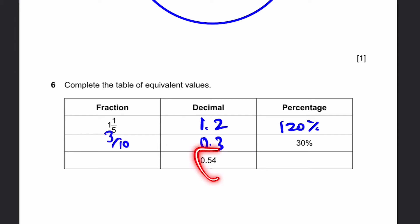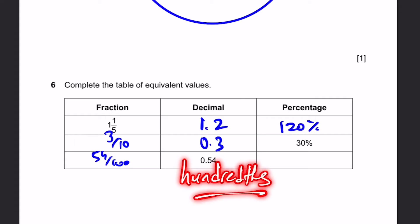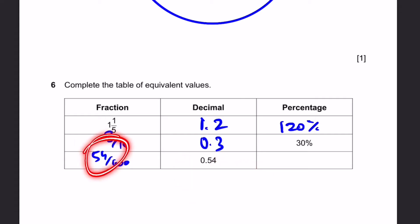Now, we have the decimal 0.54. So this is actually 54 by 100 because we have 54 hundredths. But then we can write this in a simplified form as 27 by 50, if we divide 2 on both sides from 54 by 100. Now, percentage, we multiply the decimal by 100, so we get 54%. That's our answer.